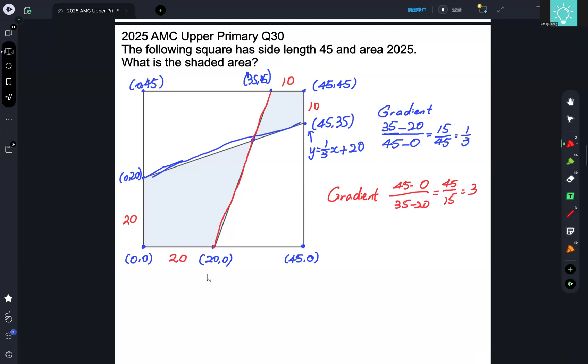So the equation for this line is y is equal to 3x and then something. Now, when y is equal to 0, x is equal to 20. So 3x is equal to 60, so we have to minus 60.